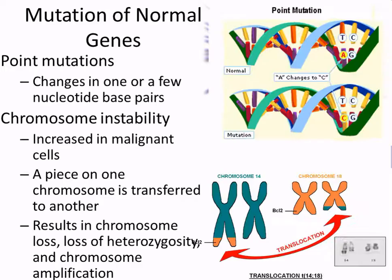Cells can mutate through point mutations — where a few base pairs change — or chromosome mutations, where the whole chromosome breaks. In chromosomal mutations, a piece can break off and be placed on a different chromosome through translocation.